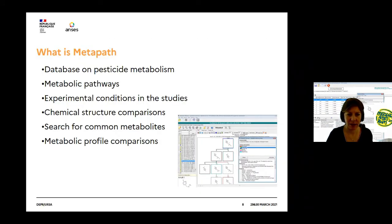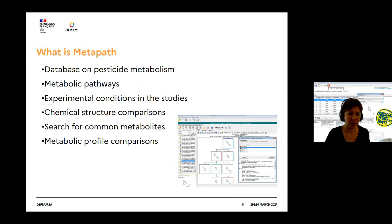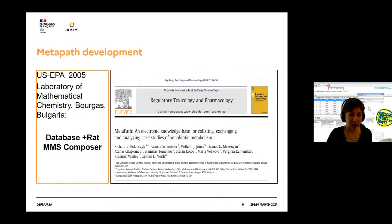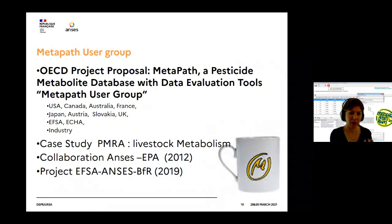What is Metapath? First, it's a database on pesticide metabolism which can contain all the metabolic pathways for all active substances. The database contains the experimental conditions reported in the studies and allows comparison of chemical structure, search for common metabolites and metabolic profile comparison. Metapath has been developed since 2005 by EPA and the Laboratory of Mathematical Chemistry of Burgas in Bulgaria. They first developed the database based on rat and animal metabolism. Then, with effort from the MUG — Metapath User Group — and OECD, MSS Composers for plant and rotational crops were developed and the database populated through several projects.